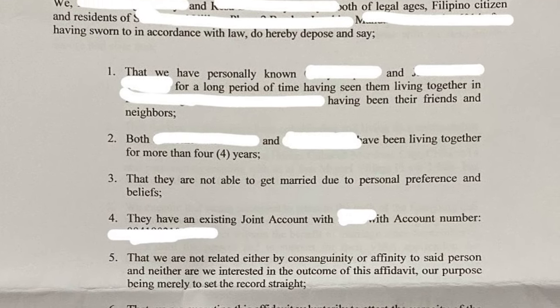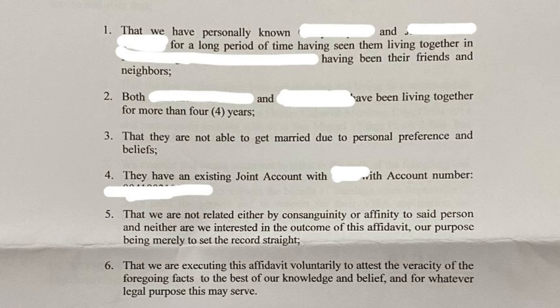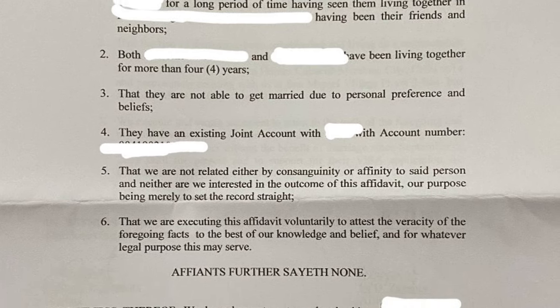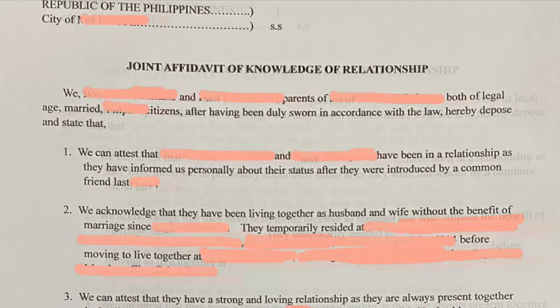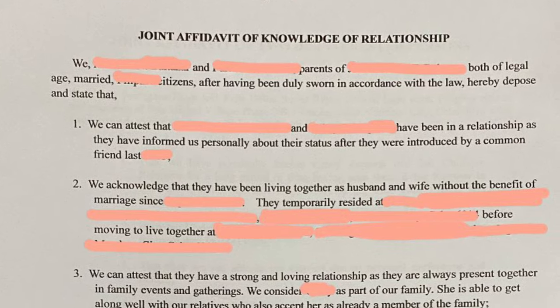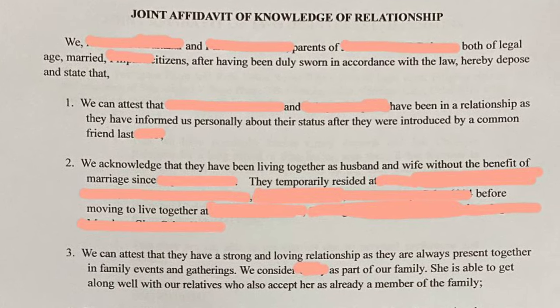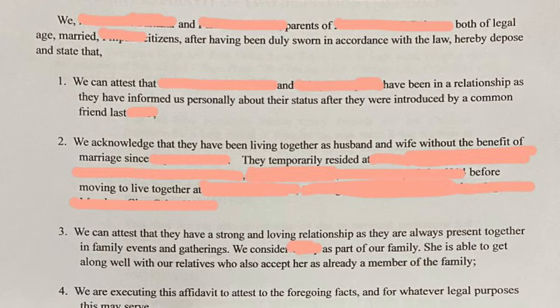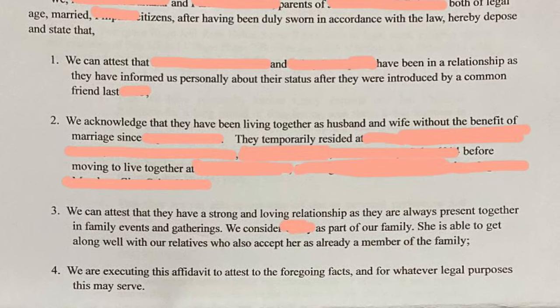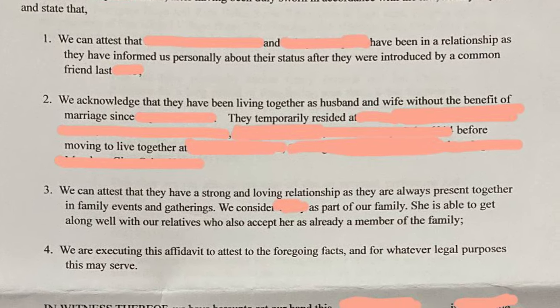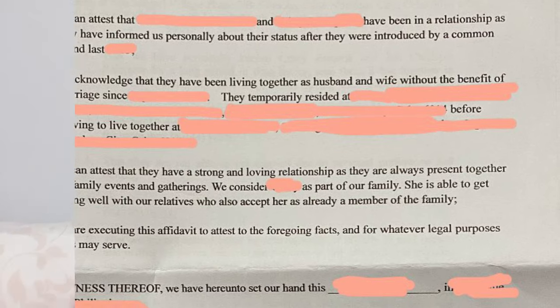Two disinterested persons are people who can testify to your relationship but are not related to you. You can also use a joint affidavit of knowledge of relationship, where your parents, friends, and relatives testify that they acknowledge your relationship. You'll also have to fill up and notarize the statutory declaration of common law union.